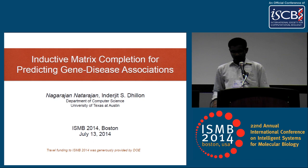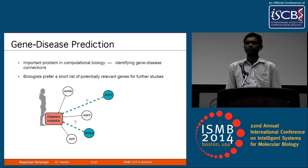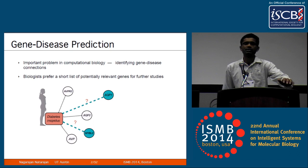The problem is basically predicting gene-disease connections. This is a very significant problem, as you all know. For example, predicting novel associations could lead to gene therapy, and you can even personalize medicine if you know that a particular gene or set of genes are responsible for a disease.